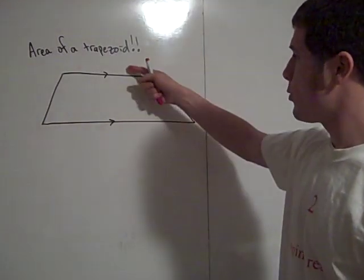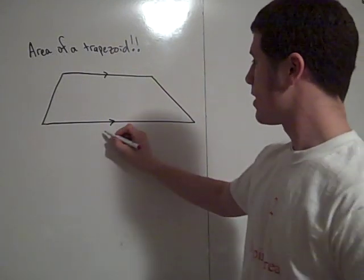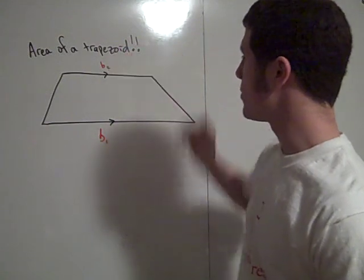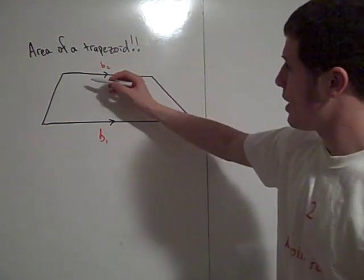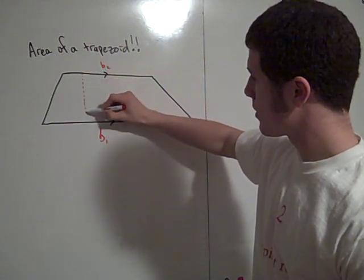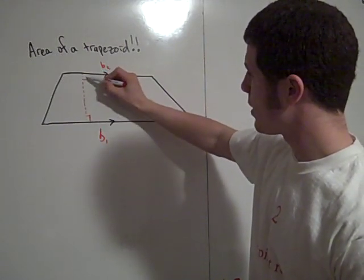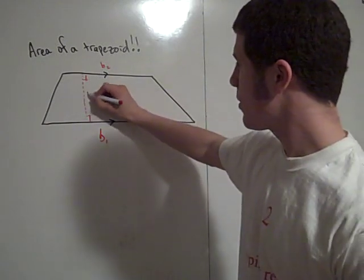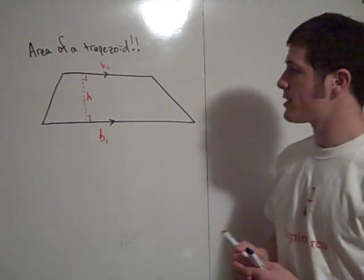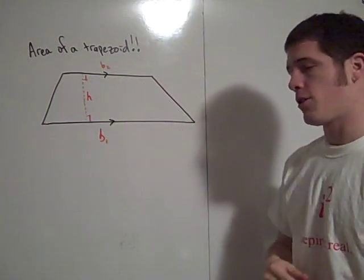The two parallel sides in a trapezoid are the bases, so we'll call this base 1 and this base 2. The perpendicular distance between the bases, that's the height of the trapezoid. And as long as you have these three measurements, you're good to go.